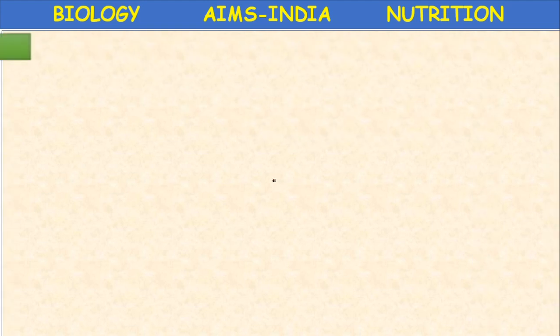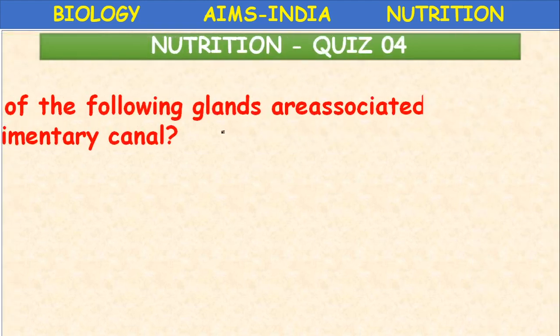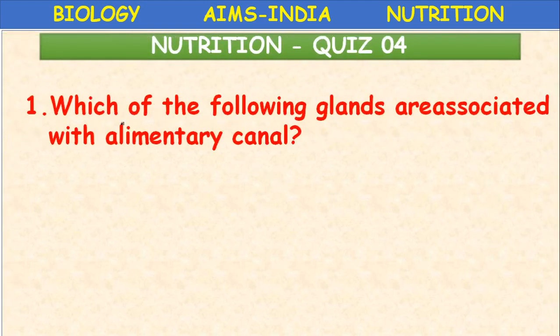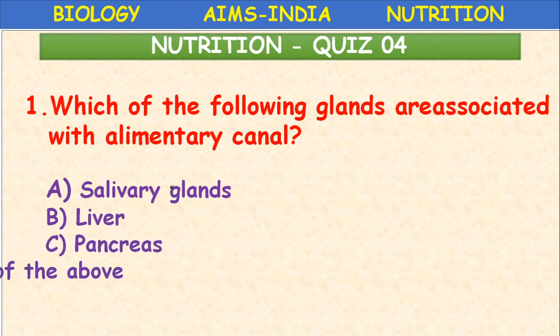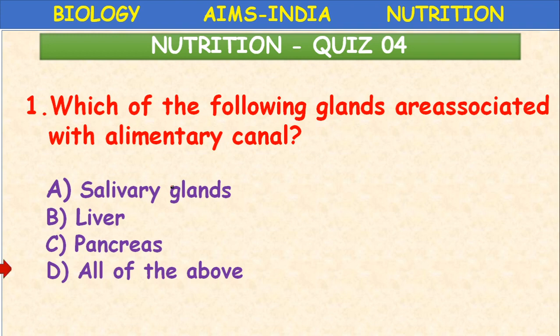Quiz time. Which glands are associated with the alimentary canal? Salivary gland, liver, pancreas — the answer is all of the above. They produce saliva, bile juice, and pancreatic juice respectively.